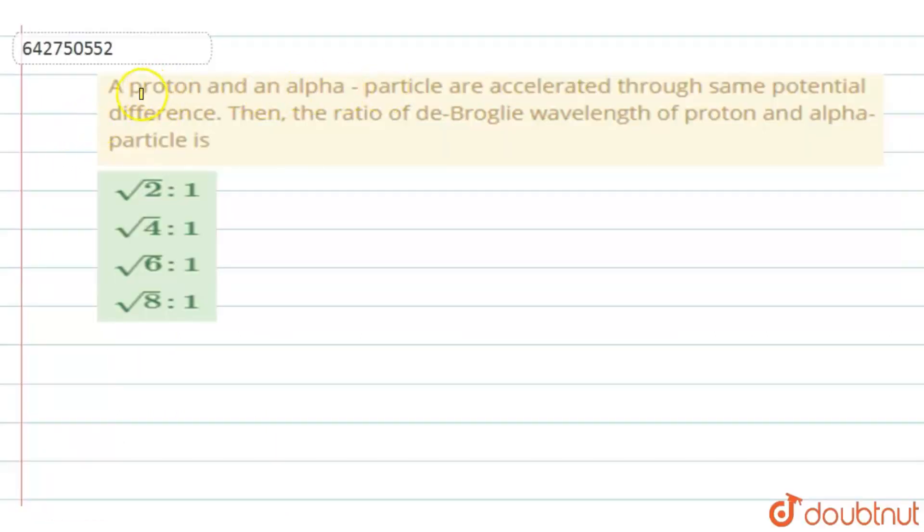A proton and an alpha particle are accelerated through the same potential difference. Then the ratio of the de Broglie wavelength of proton and the alpha particle is.